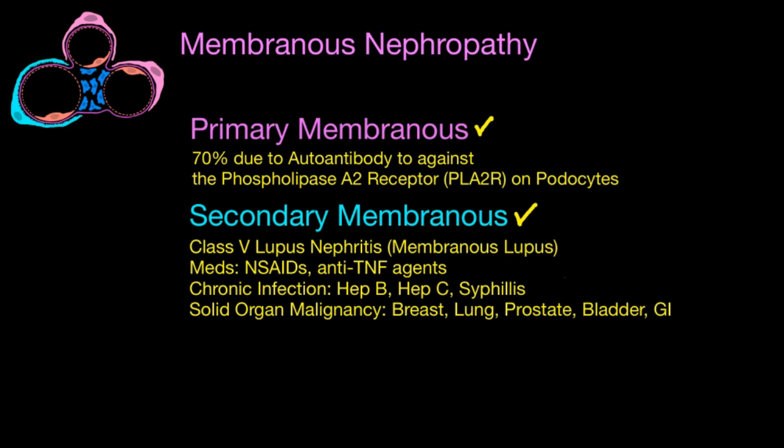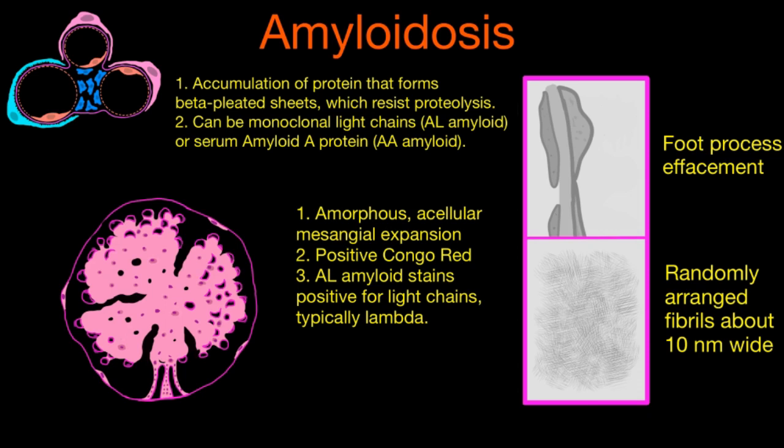Another cause of nephrotic syndrome is amyloidosis. This is essentially a systemic illness that can affect the kidney through accumulation of protein that forms beta-pleated sheets. When the protein aggregates like this, it's resistant to proteolysis and just accumulates inside organs, causing nephrotic syndrome and kidney failure. It can be either accumulation of monoclonal light chains — called AL amyloid — or accumulation of serum amyloid A protein — called AA amyloid.